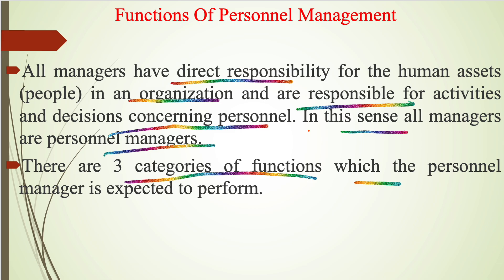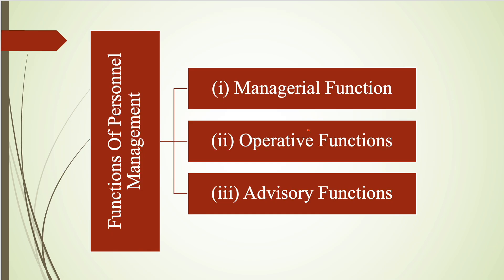Basically, there are many functions of personal management in which we treat the employees of an organization as human assets. There are three types of functions: first is managerial function, second is operative function, and the last is advisory function. We will discuss each of these points one by one in detail.